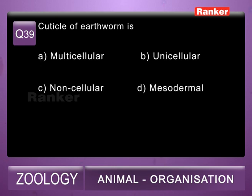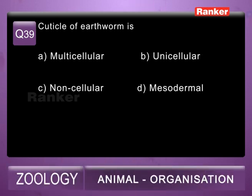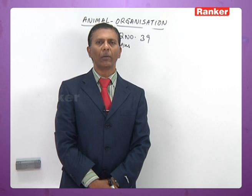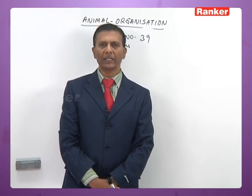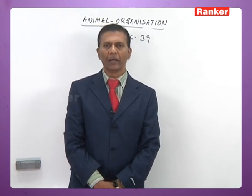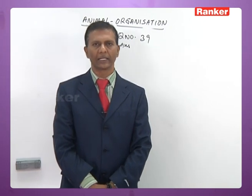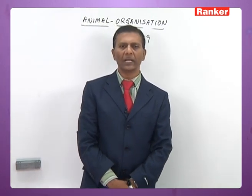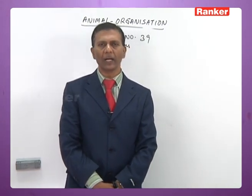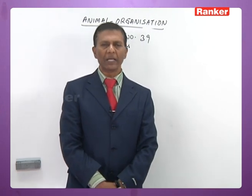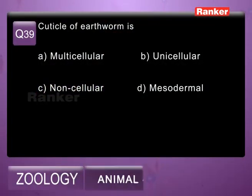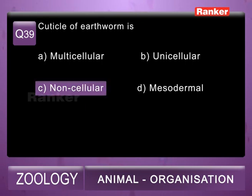39th question: the cuticle of earthworm is A) multicellular, B) unicellular, C) noncellular, D) mesodermal. The cuticle in earthworm is noncellular, deposited with polysaccharides, mucin, and chitin. It is secreted by the basal cells of epidermis. So the 39th question correct answer is C, noncellular.